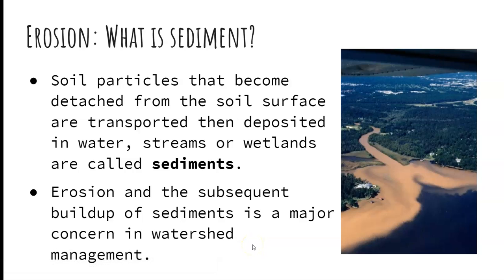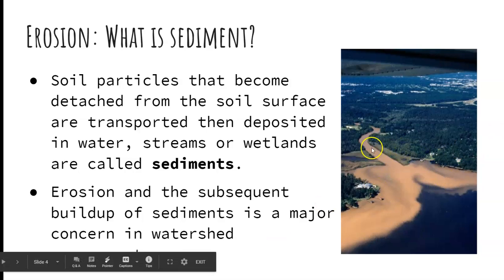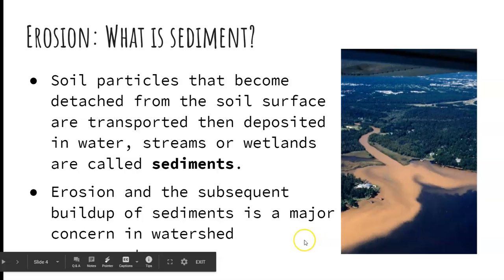Sediments are those soil particles that are detached from the soil surface, transported, and deposited — that's what we call sediments. Sand, silts, and clays are what we call sediments that get into the stream. This photograph here is showing all those sediments coming from a river being deposited into what is perhaps an ocean or a lake — all that cloudiness represents those sediments.